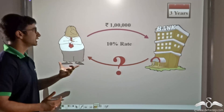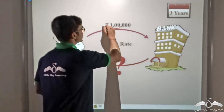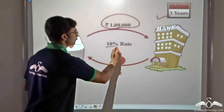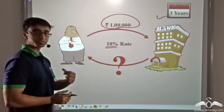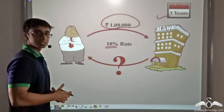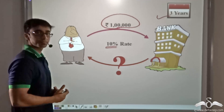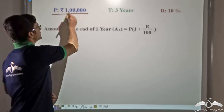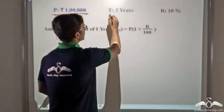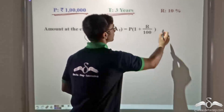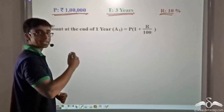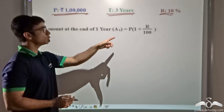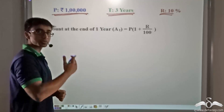Let us say that Sudhir has deposited his one lakh rupees in the bank for a period of 3 years. The bank is offering him a rate of 10%. So the principal is 1 lakh rupees, the time is 3 years, and the rate is 10%. The amount at the end of the first year will be given by P into 1 plus R by 100, as we had seen from our previous discussion.